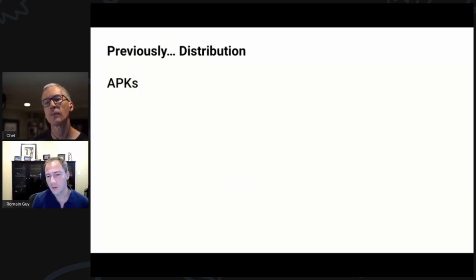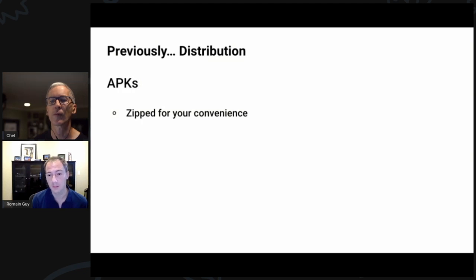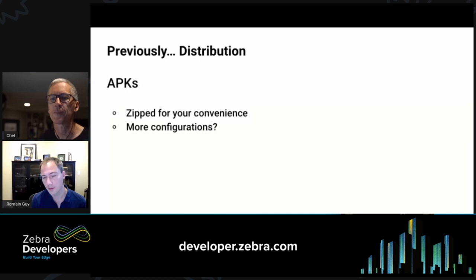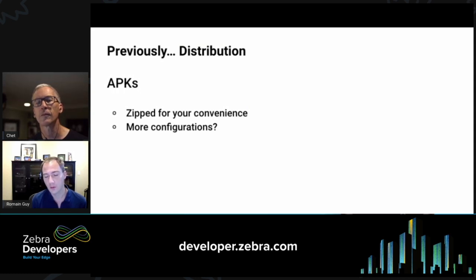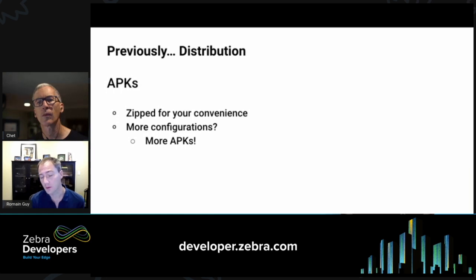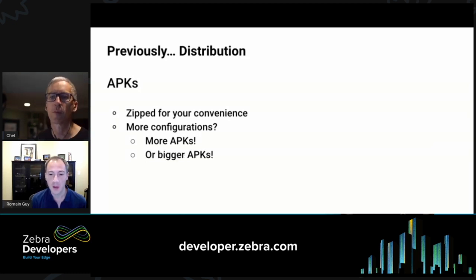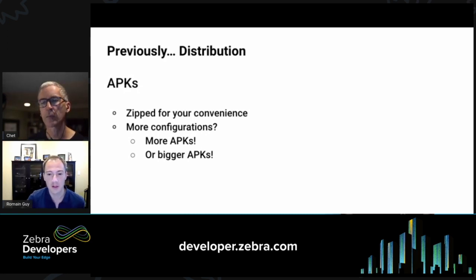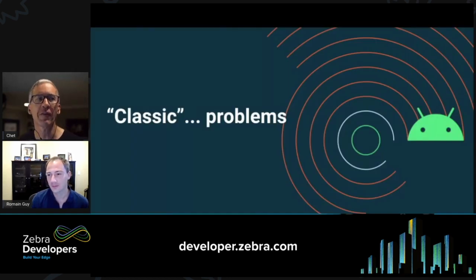To distribute your app we introduced the APK format — the Android Package — effectively a zip file containing your code and pre-compiled resources. One big issue was that the more configurations you added support for, like more screen resolutions, the bigger your APK got. With large screen resolutions, bitmaps were the main way to distribute assets since we didn't have vector drawable support yet, so APKs started getting really large, and phones back then didn't have much storage.